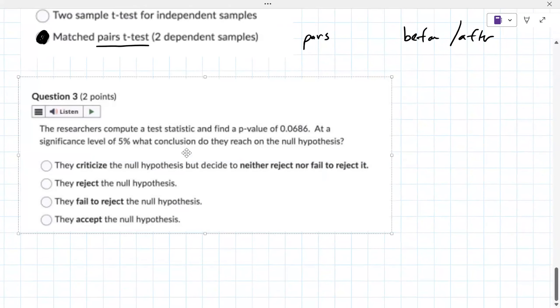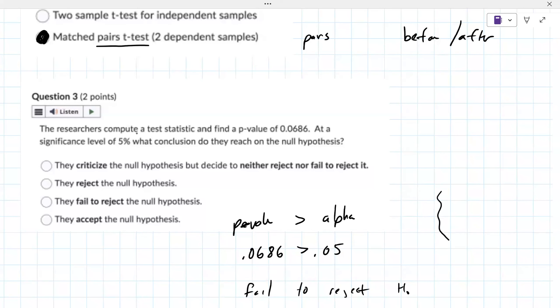They're not actually asking you to do the calculation. It gives you the P value. At the 5% level of significance, your P value is 0.0686, which is greater than 0.05. You fail to reject H0 because the P value is greater than alpha. When the P value is less than alpha, that's when you reject. Here you fail to reject. Which I always thought was weird when I first learned this stuff, but that's the way they word it.